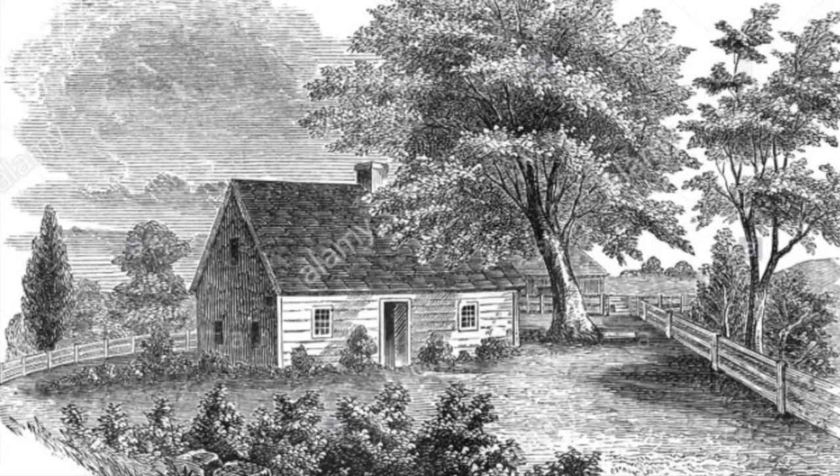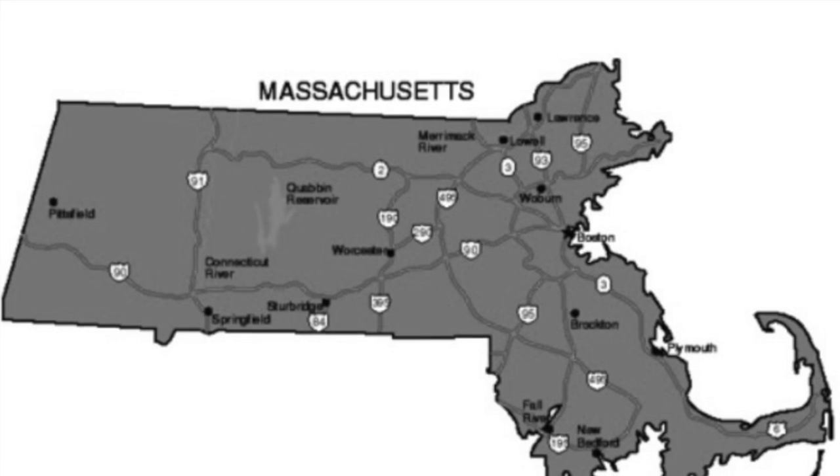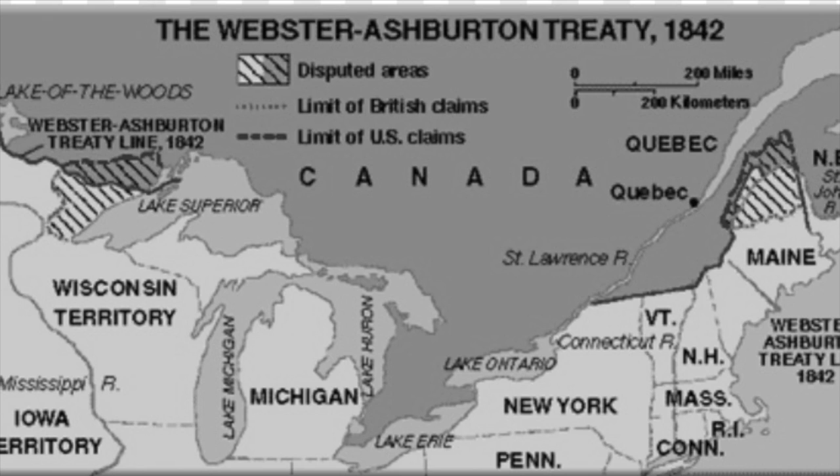Daniel Webster was an American statesman who earned his fame for his staunch support of the federal government and his skills as an orator. Daniel Webster was born in Salisbury, New Hampshire on January 18th, 1782, and died at the age of 70 on October 24th, 1852. He served in the US Congress, originally as a lawyer, later being selected as a New Hampshire congressman in 1813. He then became the Massachusetts Congressman and Senator, and then became the US Secretary of State in 1841. He helped ease border tensions with Britain through negotiations of the Webster-Ashburton Treaty in 1842.